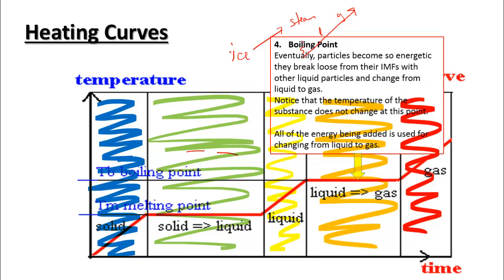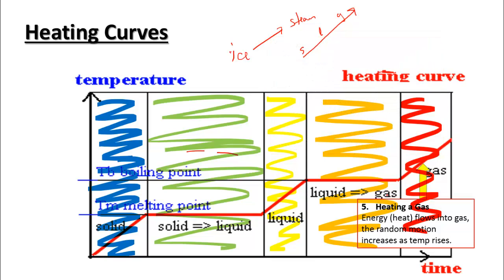Eventually, we reach this next plateau here. The particles become so energetic they break loose from their IMFs. IMFs are the only things holding liquid particles together. But now they have so much energy they break loose from them, and they start to change from a liquid to a gas. Again, notice the temperature does not change at this point. All of the energy is being used to convert liquids into gases, overcome the IMFs. Eventually, we reach this region over here, which is region 5, and the energy now flows into the gas, and it causes the gas particles to move faster and faster as the temperature rises.